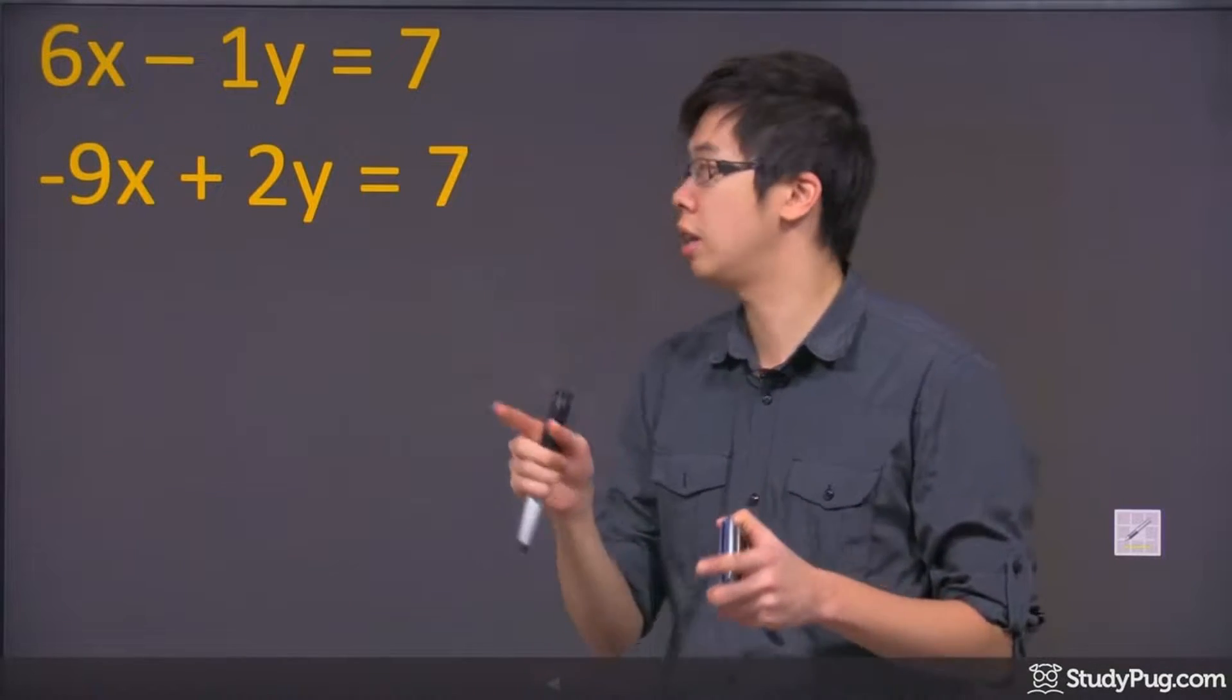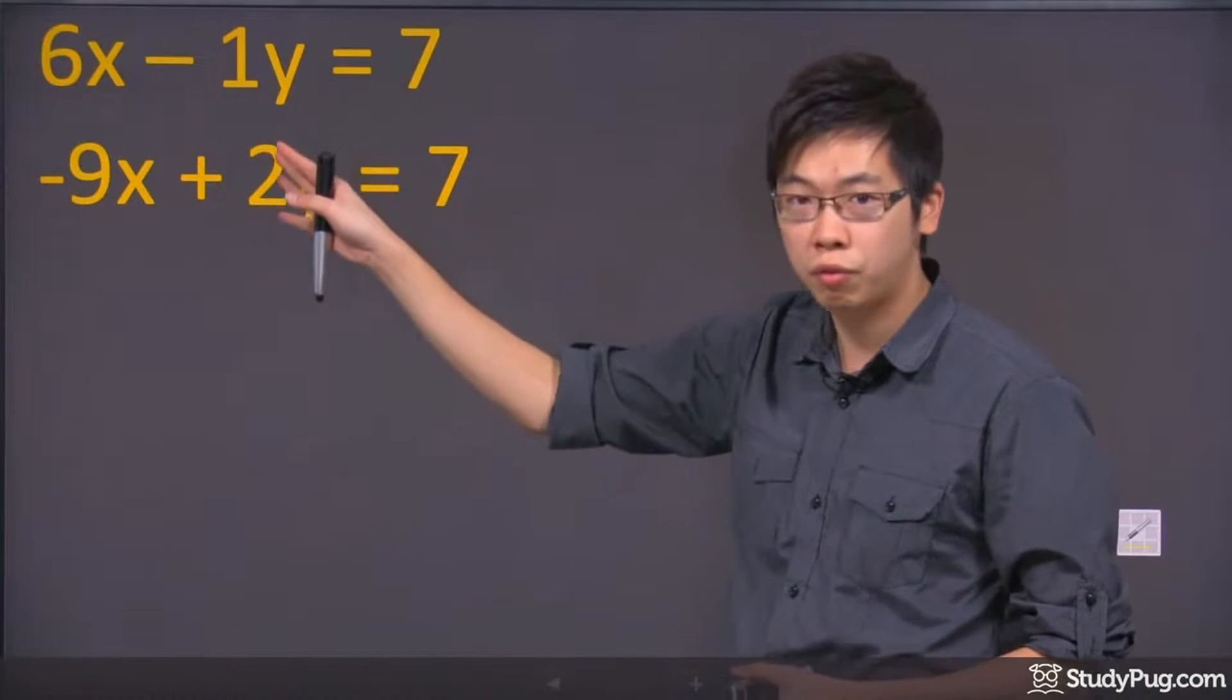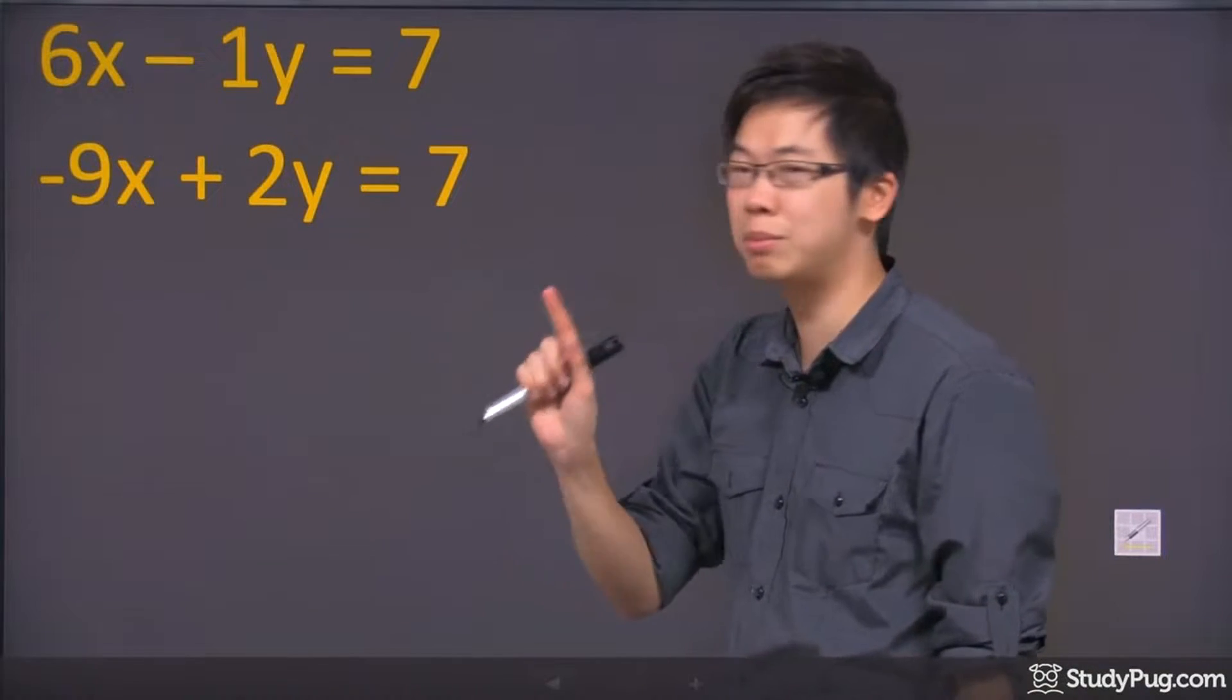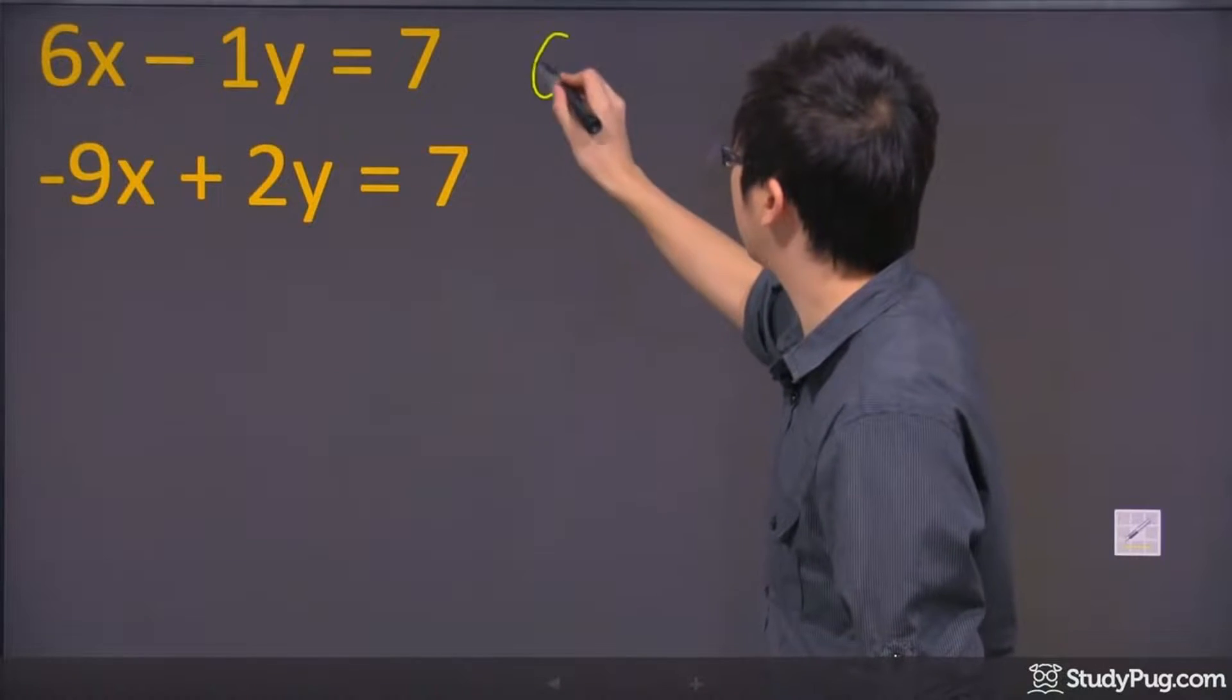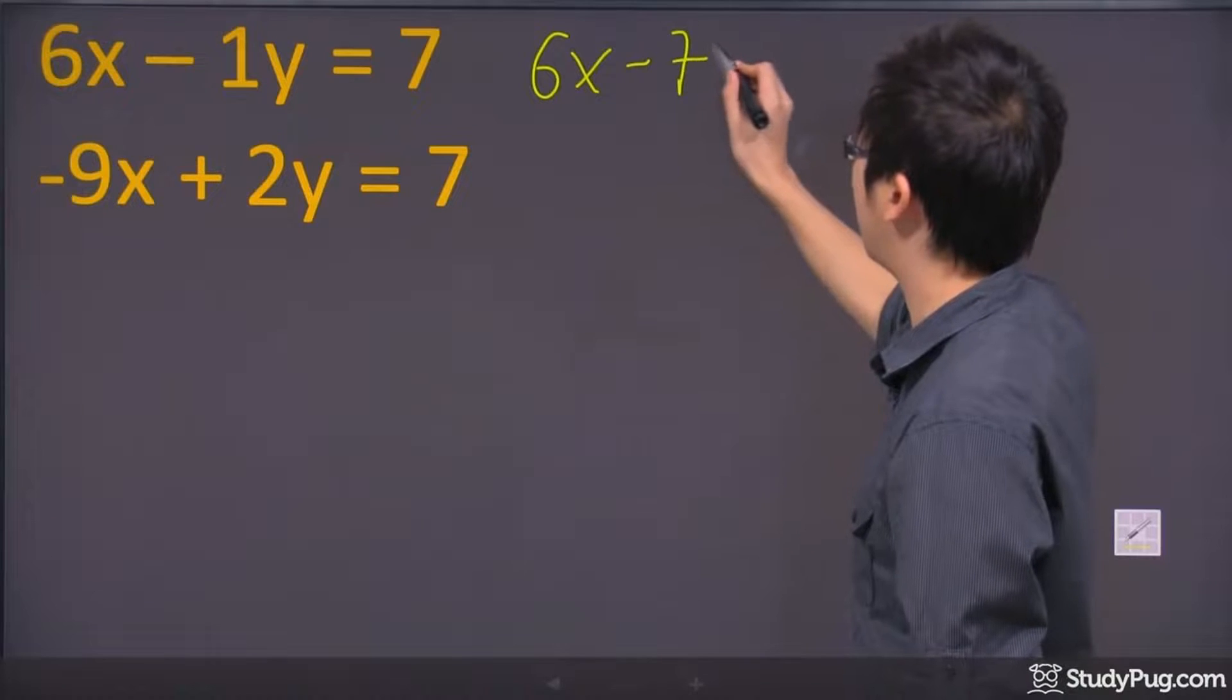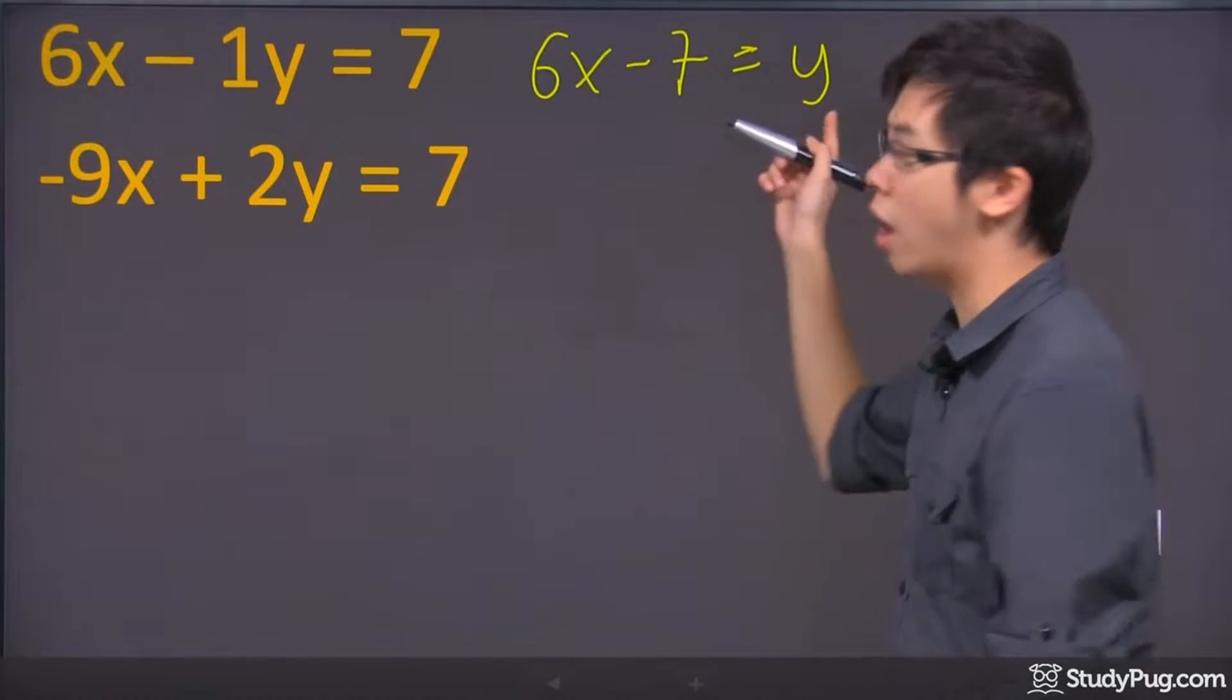What I would do is I would suggest that you take a look at your two equations first and pick the one that seems easier, like the first one. If you solve for y in the first one, wouldn't it be just 6x minus 7 equals y?